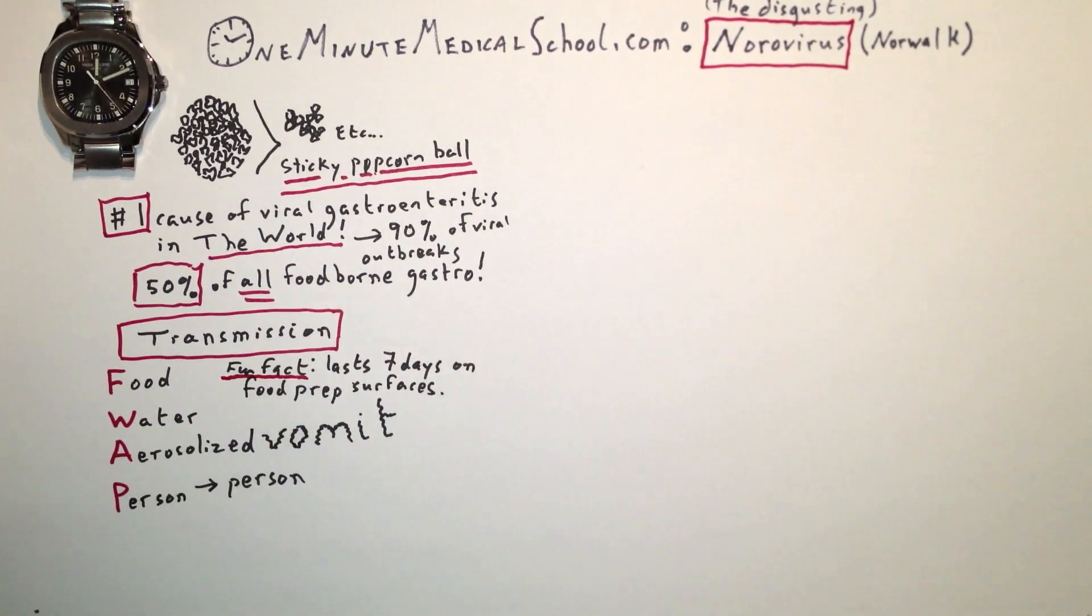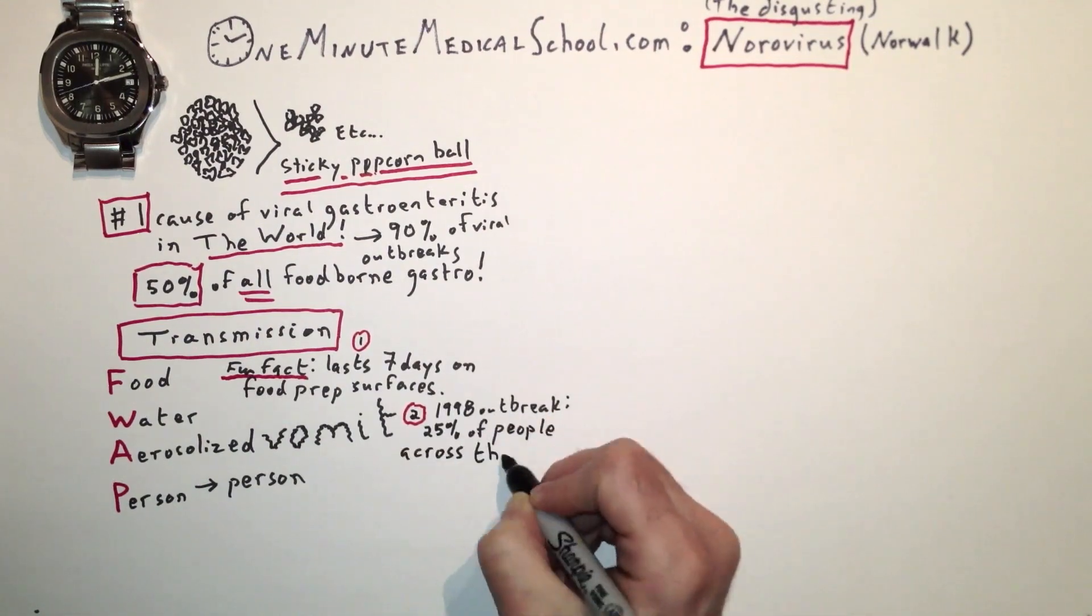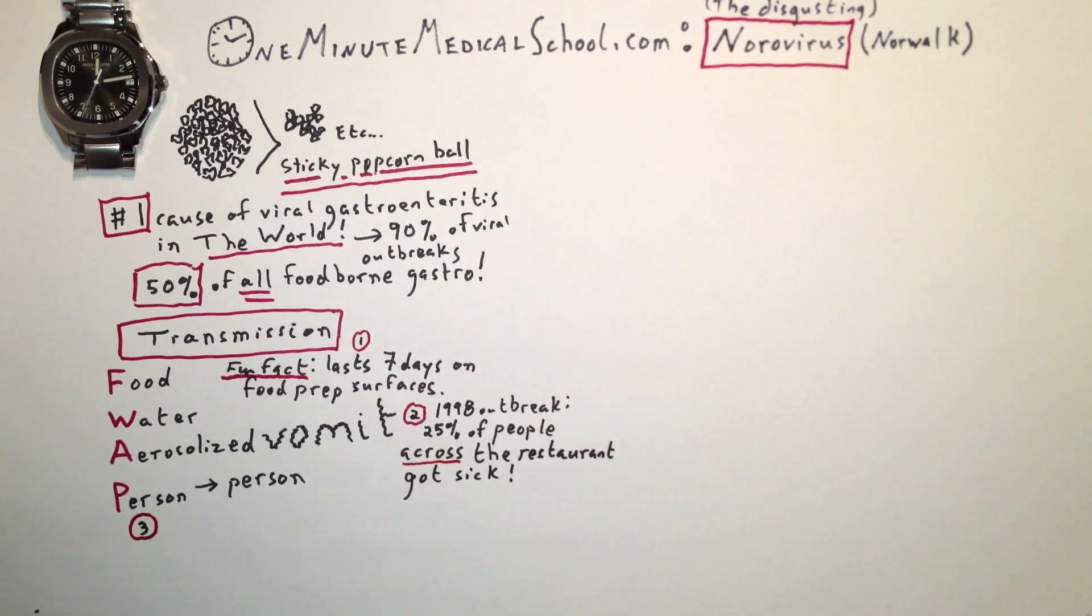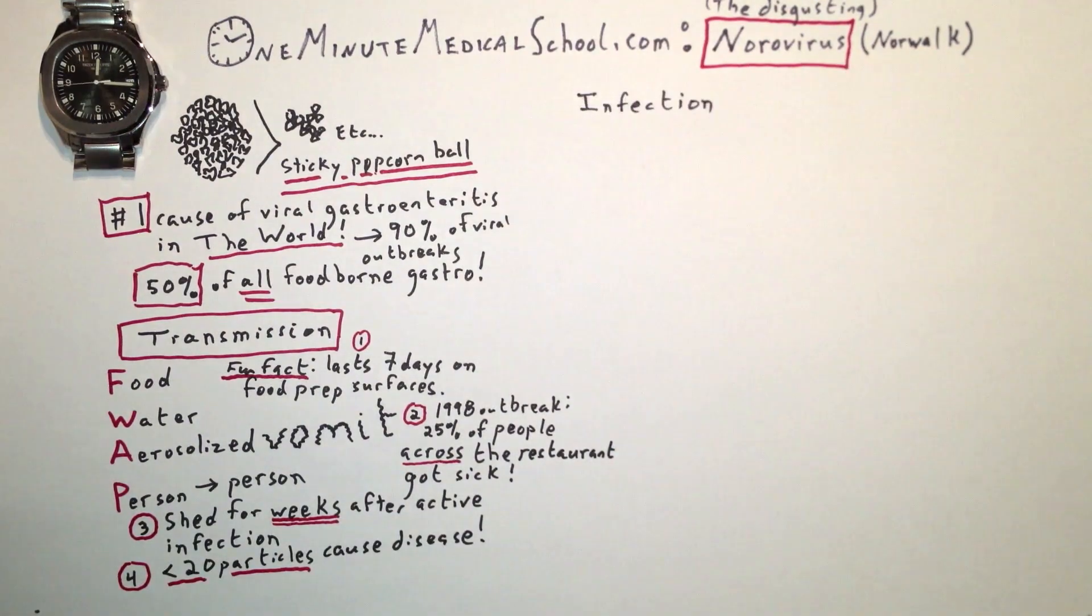Some fun facts: it lasts for days on food surfaces. A woman who vomited in a restaurant once caused outbreaks in 25% of people on the other side of the restaurant. It is shed for weeks after an active infection, and only 20 particles can cause disease.